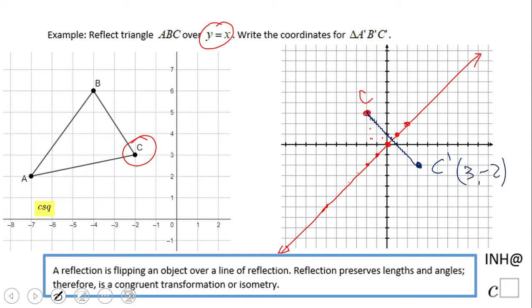So, let's put that here on the screen. We start with C, which was negative 2 and 3, and we reflect it, and we end up with C prime, which is 3 and negative 2. So, let's try to write the rule.